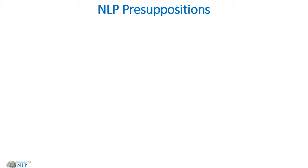We've given you a mnemonic device: 'Respect Your World,' and this is a nice easy way to remember these 14 presuppositions. The first is respect for the other person's model of the world. That doesn't mean that we accept what they're doing or that we don't change it — it simply means that we respect it and then enter into it.